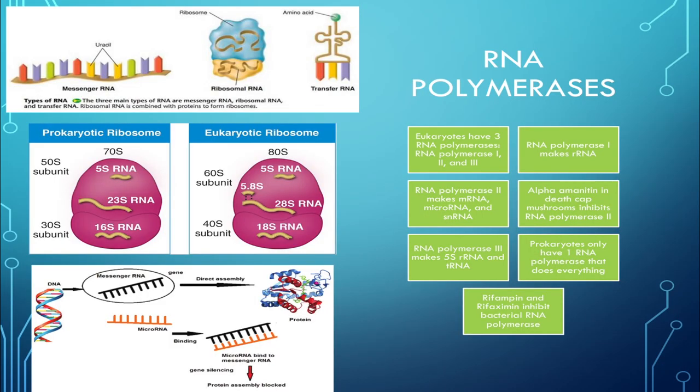In this video we will be talking about RNA polymerases — the different types of RNA polymerases as well as some fun facts about how we use drugs to interfere with certain RNA polymerases. There are three types of RNA polymerases in eukaryotes and one RNA polymerase in prokaryotes, so we'll first start by talking about eukaryotic RNA polymerases.